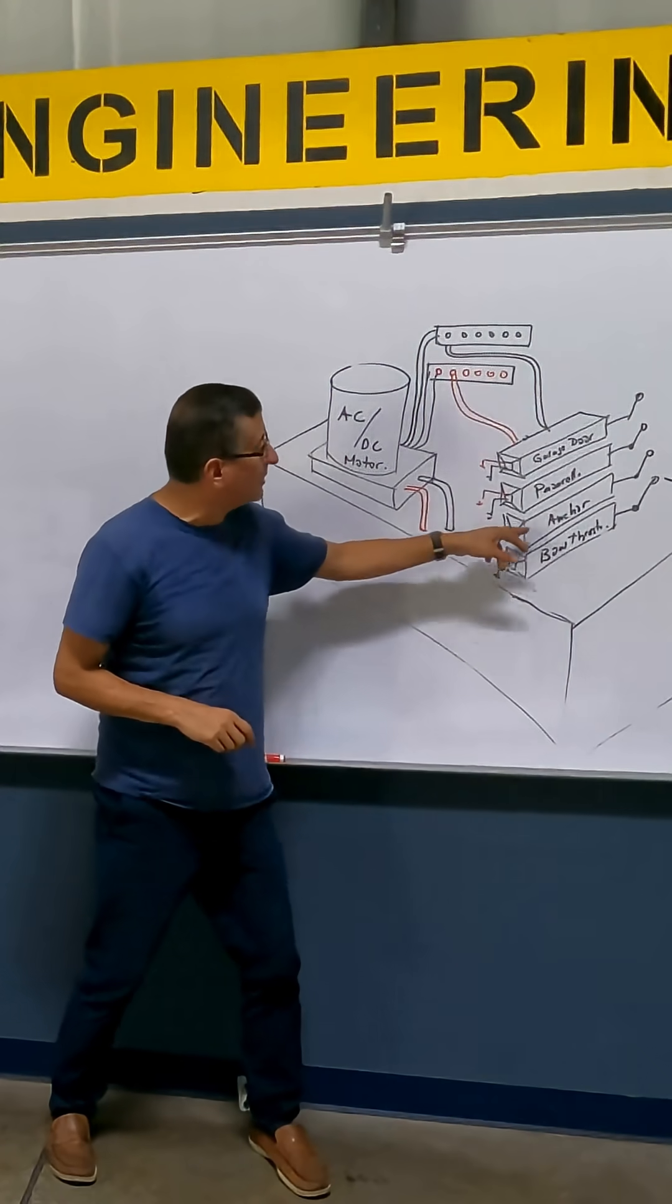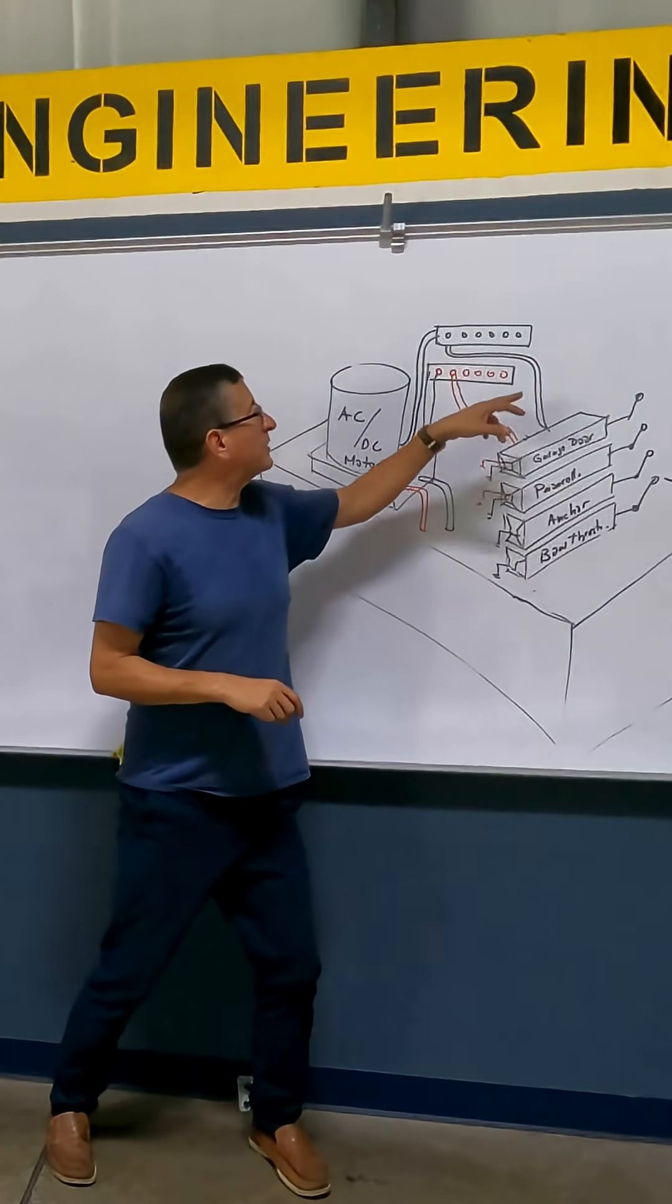One servo cylinder for boat thruster, for anchor, for passarella, for garage door, for this. I have 12.